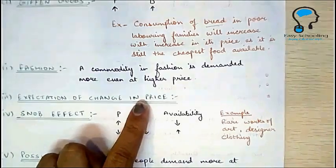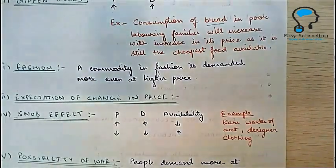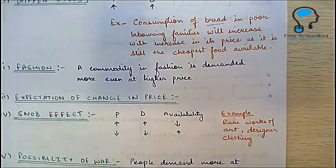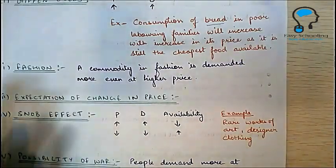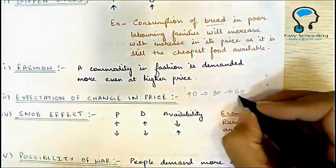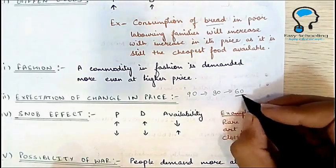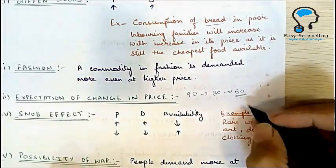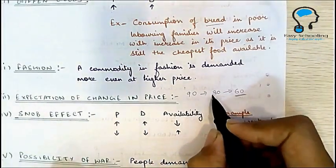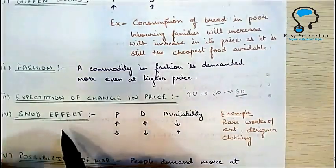The third exception is expectation of change in price. For example, today the price of onion is 80 rupees and yesterday it was 90 rupees, so it has fallen by 10 rupees. But if I expect the price will fall further to 60 rupees by the end of the week, I will not purchase at 80 rupees — I will wait. So here, price has decreased but demand has not increased, because there is an expectation of an even further decrease in price.